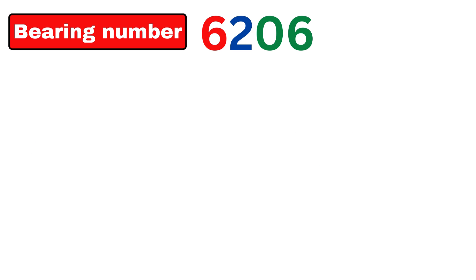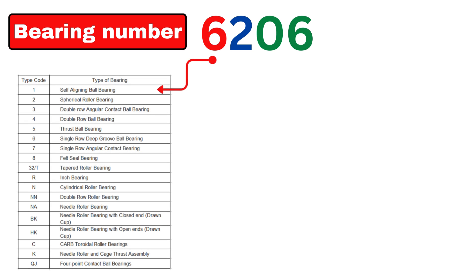Now let's look at the bearing number itself. Here you can see a four-digit number, and this is very important. The first digit — here it is 6 — shows the type of bearing. Different codes are assigned for different bearing types: 1 is for self-aligning ball bearing, 2 for spherical roller bearing, 3 for double row angular contact ball bearing, and so on as shown in the table. For 6206, since it starts with 6, it indicates a single row deep groove ball bearing.